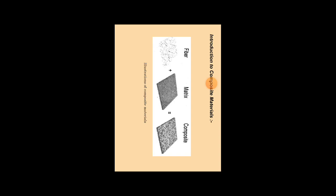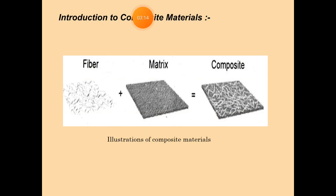Now, the composite is the combination of two or more materials. Here, fiber plus matrix equals composite. The figure shows fiber plus matrix.